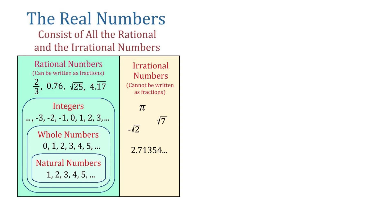The natural numbers are the numbers that we use for counting, and to represent them we use letter N. So we write N equals braces 1, 2, 3, 4, 5, and so on.